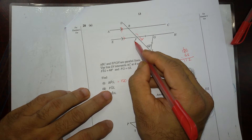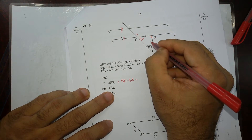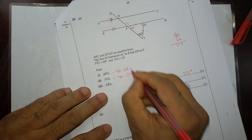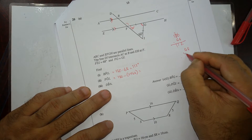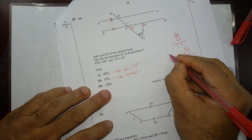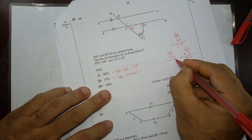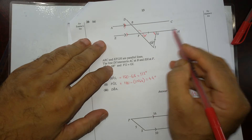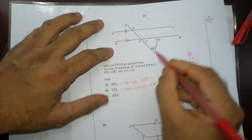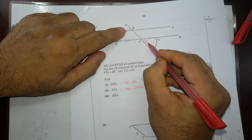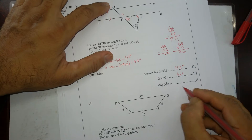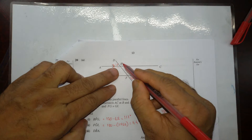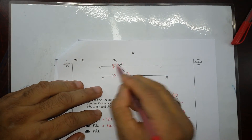To find angle FGI: the sum of the three angles in the triangle equals 180 degrees. So this angle is 180 minus 2 times 68, which is 180 minus 136, equals 44 degrees. Now for angle DBA: if you look closely, these two are alternate angles, so you can write down directly that DBA is 68 degrees.